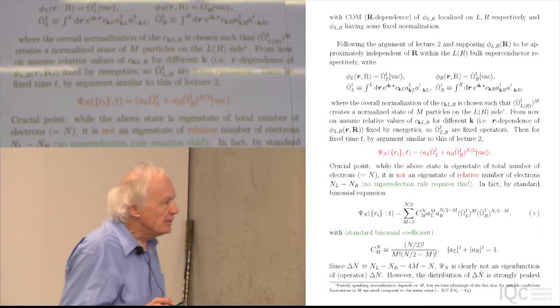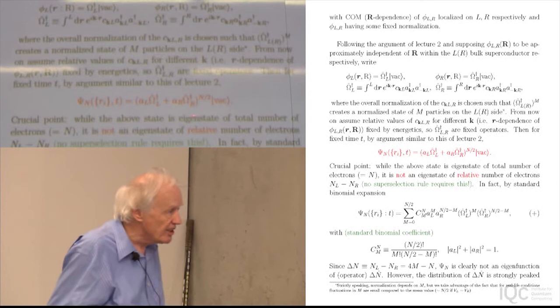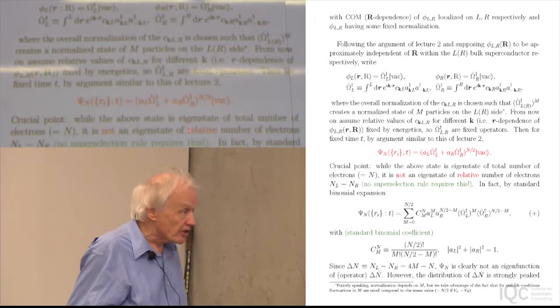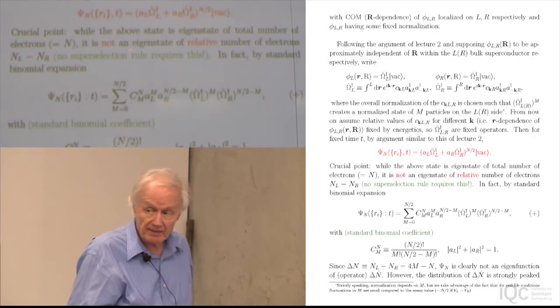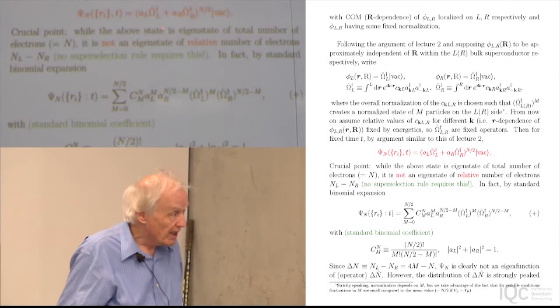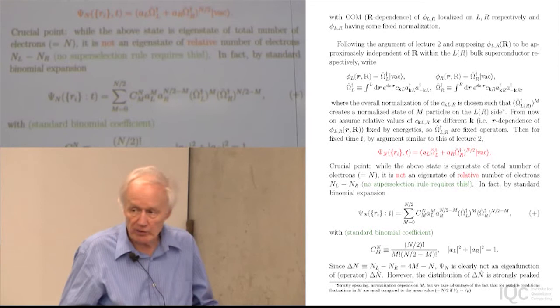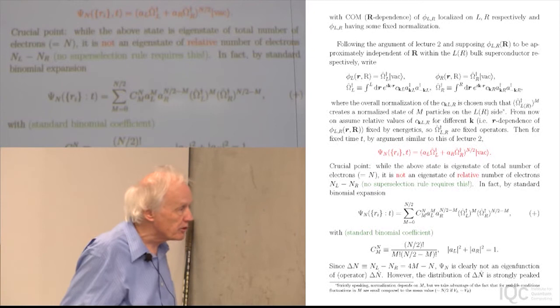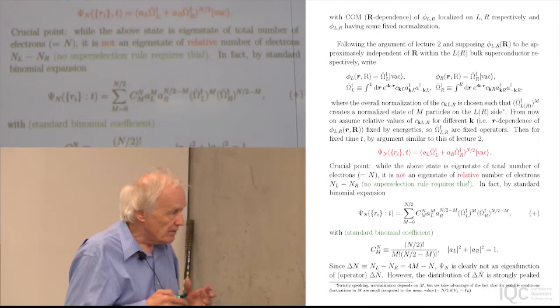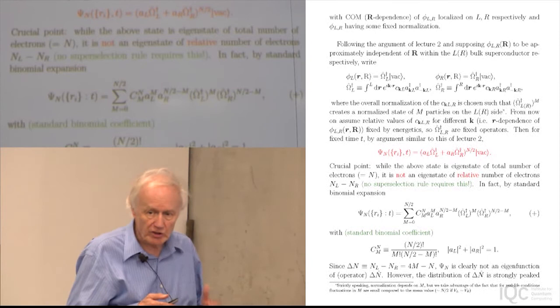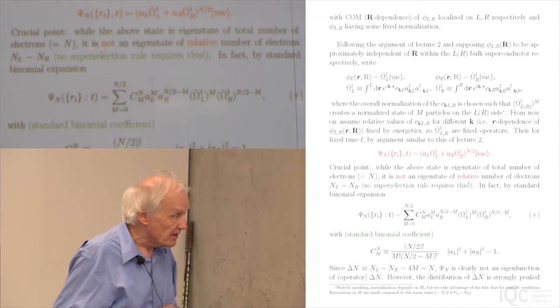Crucial point: this state is, by construction, an eigenstate of the total number of electrons N. But it's not an eigenstate of the relative number NL minus NR — there's no superselection rule which requires this. Since the barrier is not infinite, there is a possibility for electrons to migrate from left to right. We're not just saying the number of particles on the left is fluctuating — we're saying there's a definite phase relationship between states in which there are different numbers of electrons on the left and different numbers on the right.